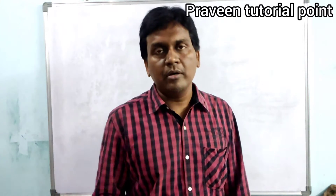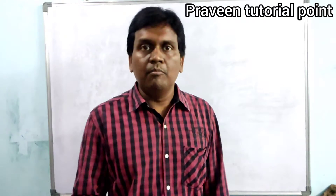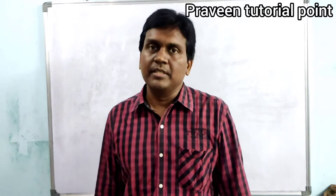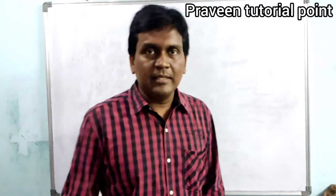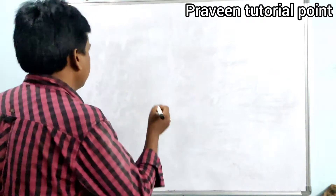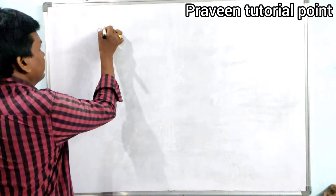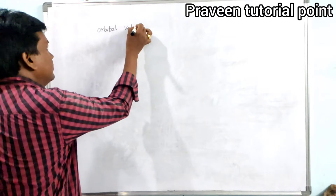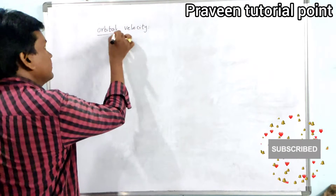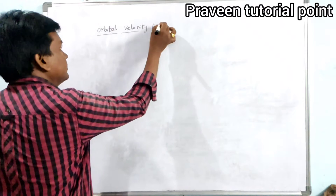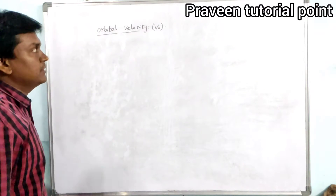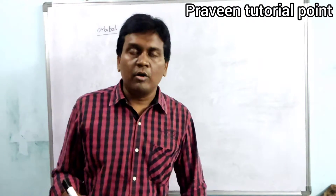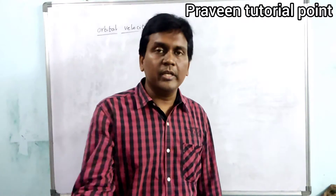To move in an orbit, a body or a satellite requires a minimum velocity. That minimum velocity is called orbital velocity. Let us have a brief discussion about this orbital velocity. Orbital velocity, V₀, is the minimum velocity required to move an object around the orbit.